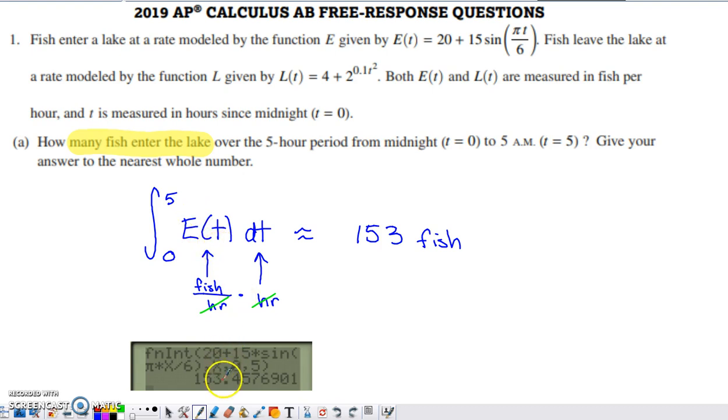If you do that integral, you can throw it into the calculator here. Just make sure you're in radian mode. It does say that we're allowed to give the answer to the nearest whole number here. Most of the time we want to go three digits of accuracy. It doesn't really make sense to say 0.47 fish or something like that. So we have 153 fish over the course of that five-hour stretch from time zero to time five.